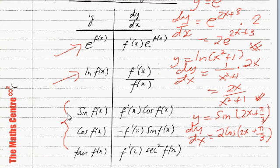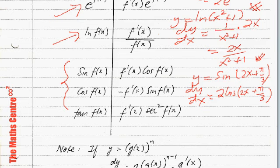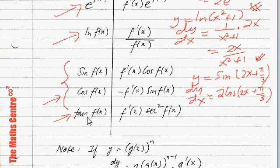We also have similar formulas for cos. If y equals cos f(x), then dy/dx equals minus f'(x) sin f(x). And one more formula: if y equals tangent f(x), then dy/dx equals f'(x) sec squared f(x).